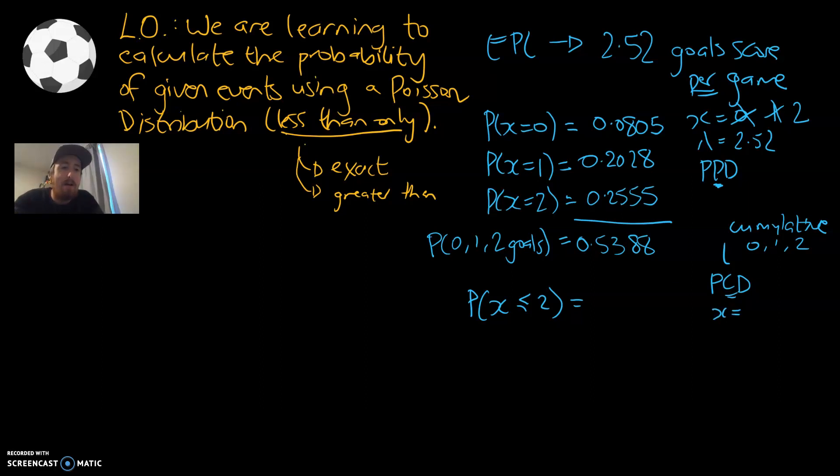Our x is the highest x value that we're interested in, which case is two. By putting in two, that's going to include one, and it's also going to include zero as well. Our lambda is unchanged, it's still 2.52 per game.